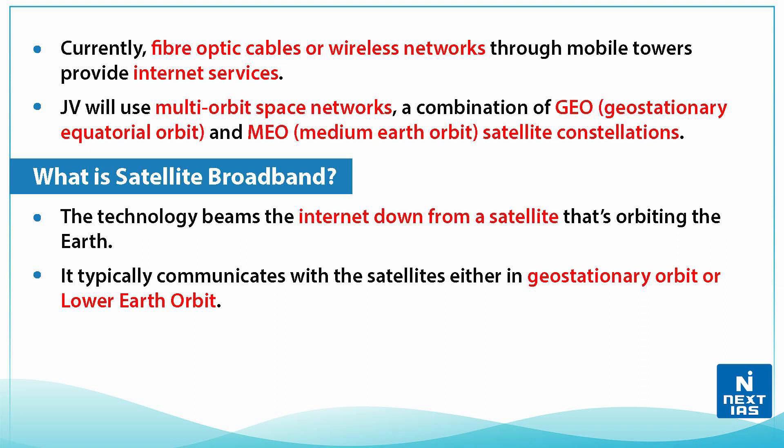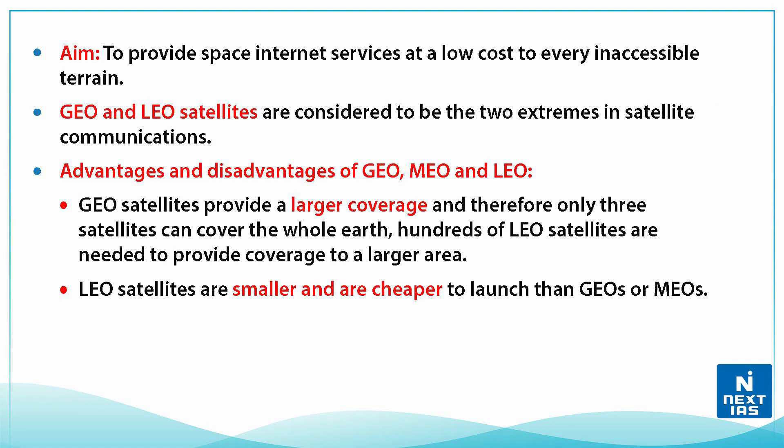When we talk about lower earth orbit, it is an earth-centered orbit near the planet with an altitude of 2,000 kilometers or less. In between the lower earth orbit and the geostationary equatorial orbit lies the medium earth orbit.